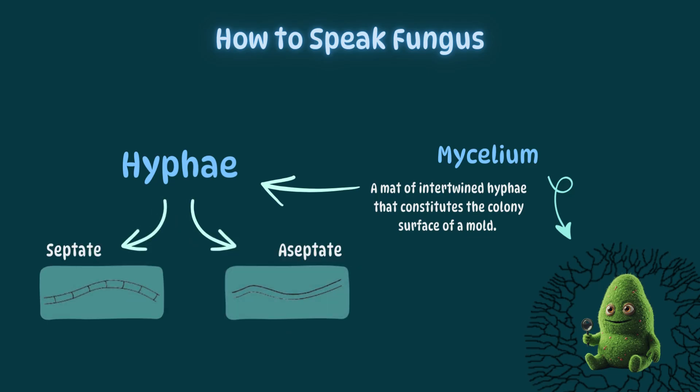There are two basic kinds of hyphae: septate on the left and aseptate on the right. The vast majority of hyphae are septate, so when in doubt, go with septate.